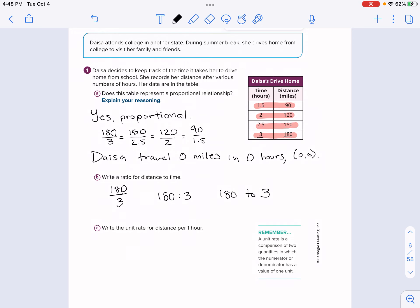Now, see, it says write the unit rate for distance per one hour. So we know that she's going 180 per three hours. But a unit rate, unit rate is off to the right. Here is a comparison of two quantities in which the numerator or denominator has a value of one unit. We're going to simplify this where we take 180 divided by 3. You could divide both these by 3.